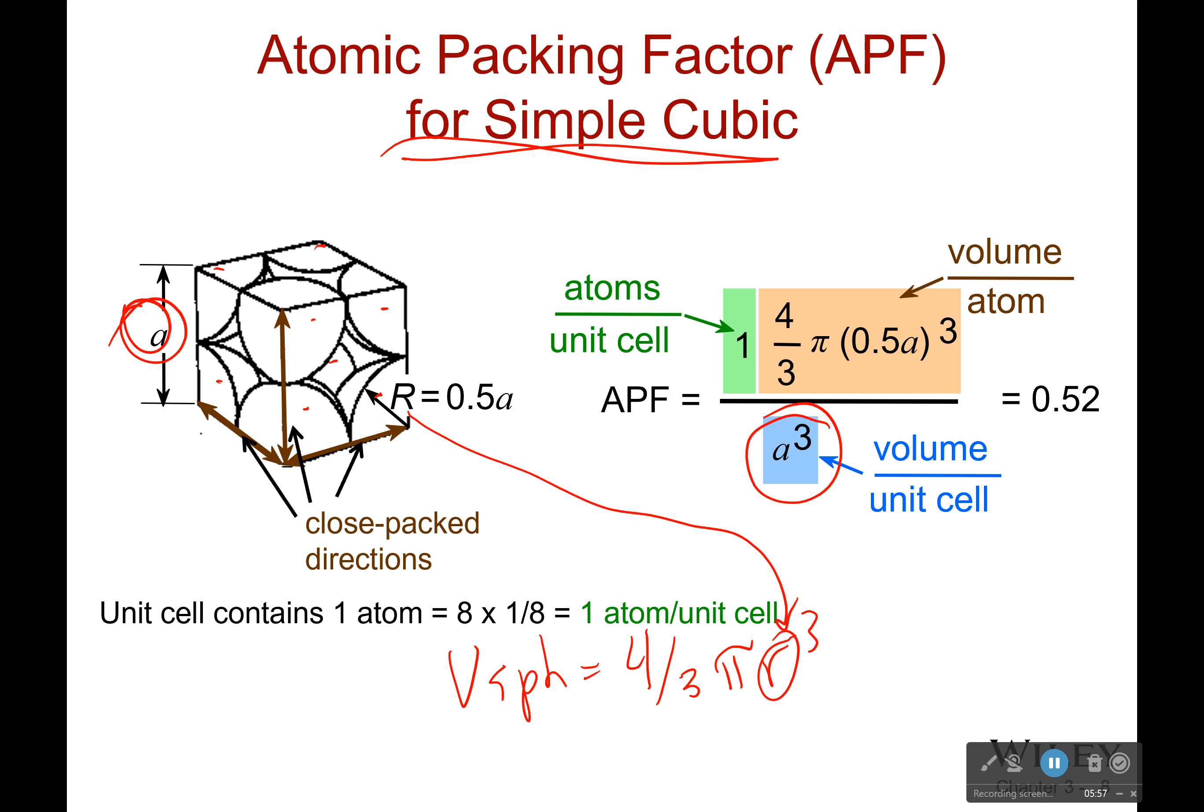If you look right here, you see that it looks like these two atoms, they touch right at that edge. And then it's one radius to the center and then it's one radius the rest of the way. So R or 2R is going to be equal to A or R is equal to 0.5 A.